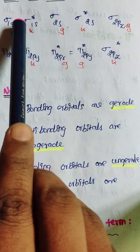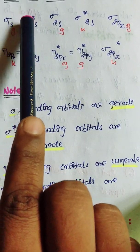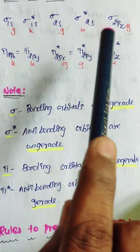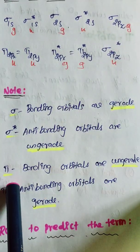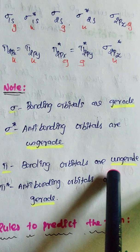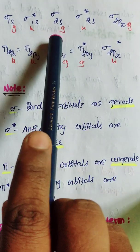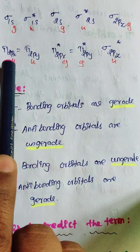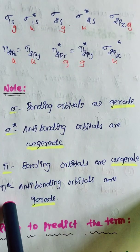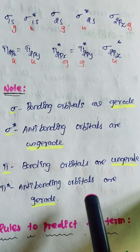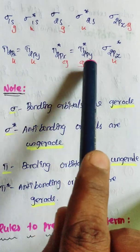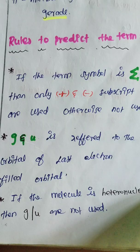Pi bonding orbitals get the ungerade label. So pi bonding orbitals are ungerade. Then pi star anti-bonding orbitals are labeled gerade. So pi* anti-bonding orbitals are gerade, and pi bonding orbitals are ungerade.